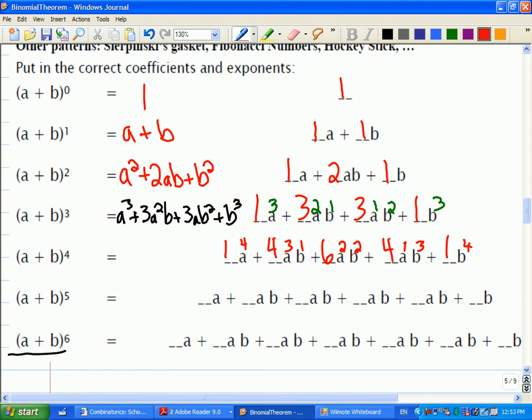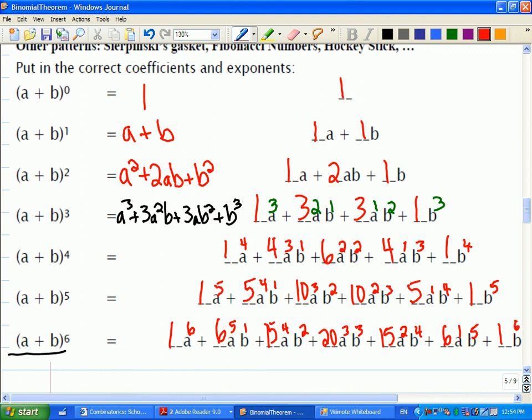Let's see how fast you can do a plus b to the 5 and a plus b to the 6. 5, 10. Yeah. See, you couldn't do it that fast without Pascal's triangle. But yes, you're correct. See how quickly you can fill it in on your notes.